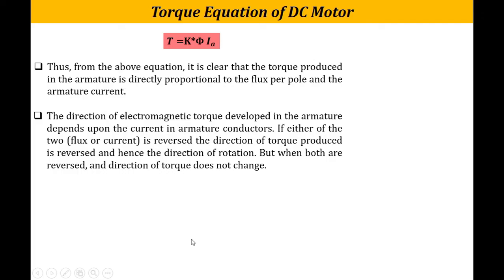The direction of electromagnetic torque developed in the armature depends on only two things: the current in the armature and the flux φ. If either flux or current is reversed, the direction of torque produced is also reversed, and therefore the direction of rotation also gets reversed. However, if both φ and Ia are reversed simultaneously, the direction of torque will not change — it will remain the same. This is the torque equation of a DC motor. Thank you.